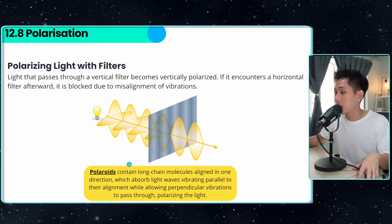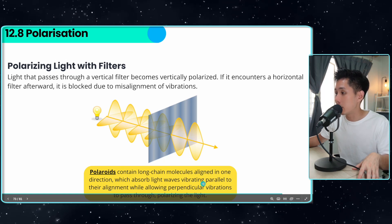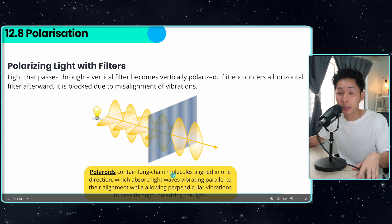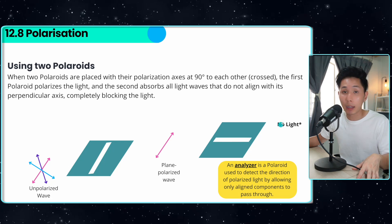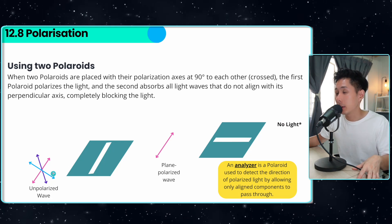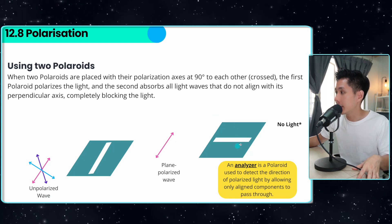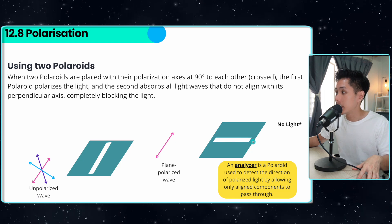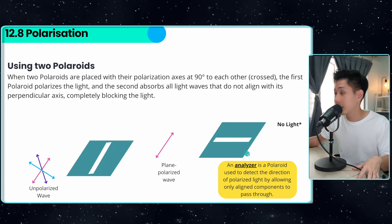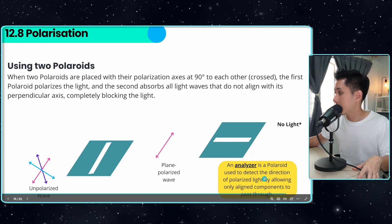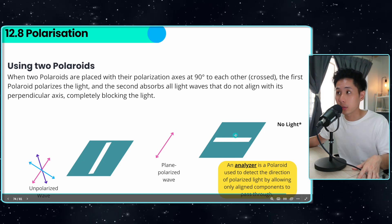This is an example of how a light wave can be polarized. If the polarized light then encounters a horizontal filter, it is blocked due to misalignment. These filters are called polaroids — they contain long-chain molecules aligned in one direction, which absorb light vibrating parallel to that alignment. If you use two polaroids, the light will be completely blocked. The second polaroid is called an analyzer: it detects the direction of polarized light by allowing only aligned components to pass through.